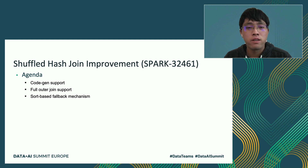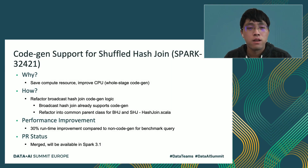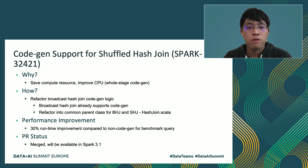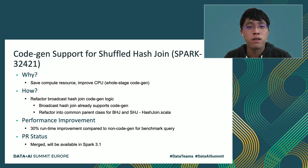Now we talk about the improvements we did around shuffle hash join. The first one is adding code gen support for shuffle hash join. The motivation is to improve CPU compute resource savings by leveraging Spark SQL whole-stage code gen. Previously, only broadcast hash join and sort merge join had code gen support. We add code gen support for shuffle hash join as well. For implementation, we refactor the broadcast hash join code gen logic into a common parent class, HashJoin.scala, since broadcast hash join and shuffle hash join have similar logic to do hash table lookup join. For benchmark queries, we are seeing 30% runtime improvement compared to the non-code-gen code path. The PR is merged into upstream and will be available in Spark 3.1.